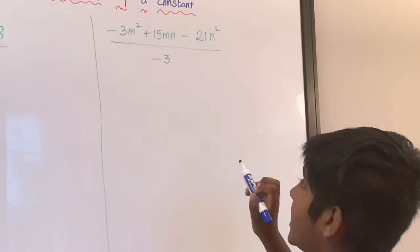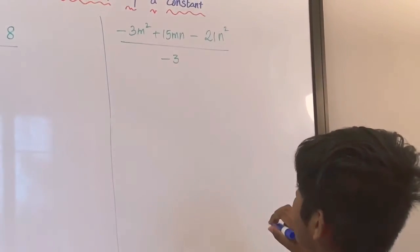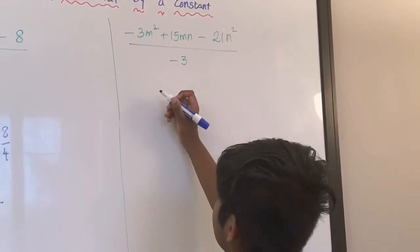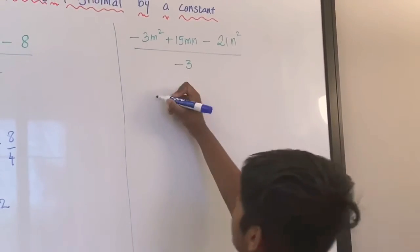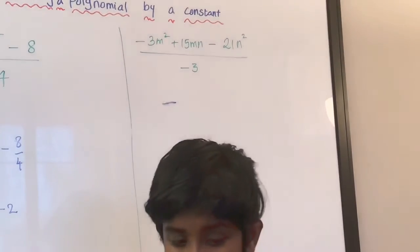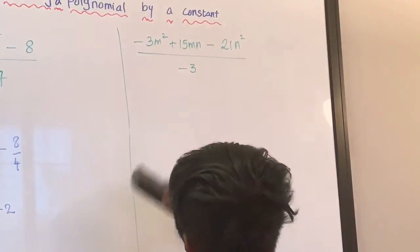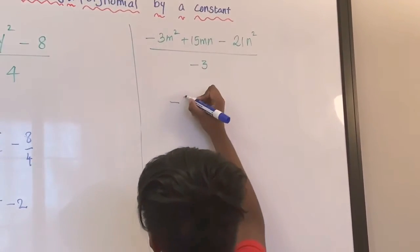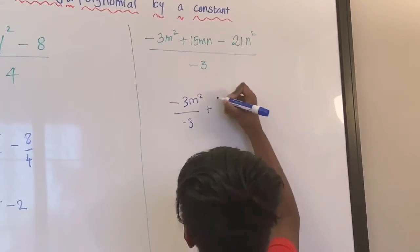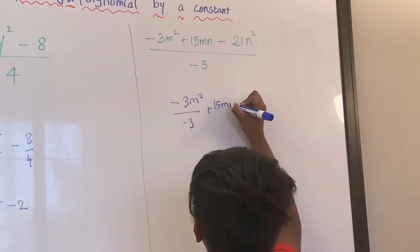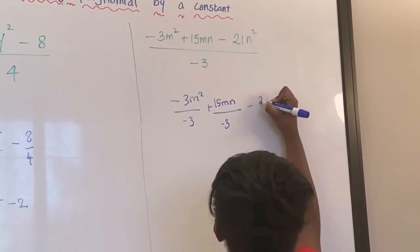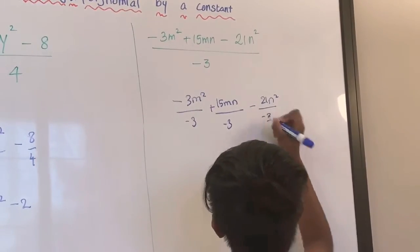Now let's go on to the next question: negative 3m squared plus 15mn minus 21n squared, all over negative 3. Let's divide it into parts: negative 3m squared over negative 3, plus 15mn over negative 3, minus 21n squared over negative 3.